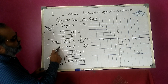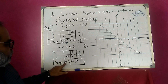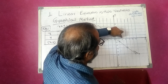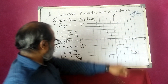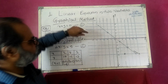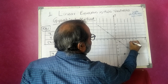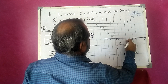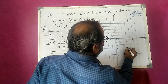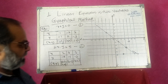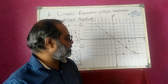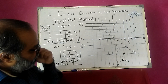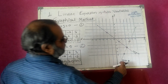For the second line, 2x minus y is equal to 9, I plot the points: (2, -5), (4, -1), and (3, -3). Note that point (3, -3) is common to both lines. I draw the line passing through these three points. The line is 2x minus y is equal to 9.